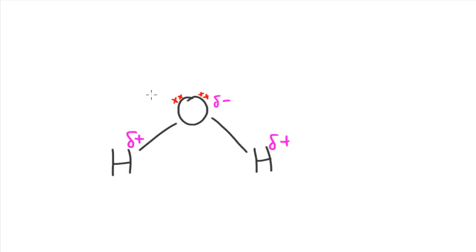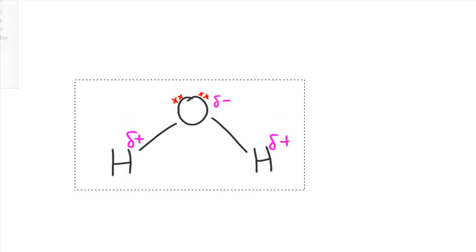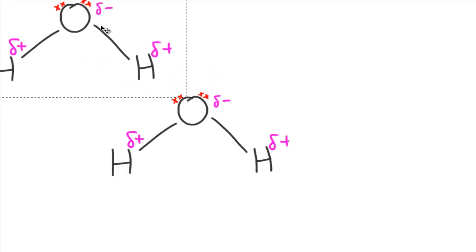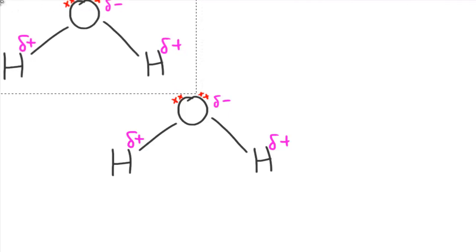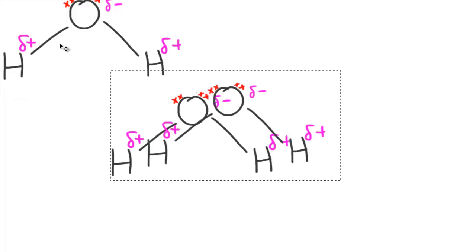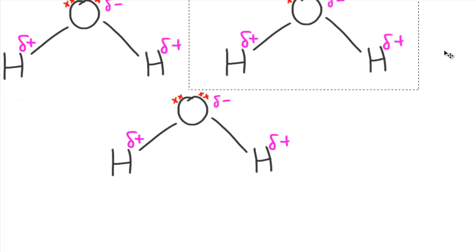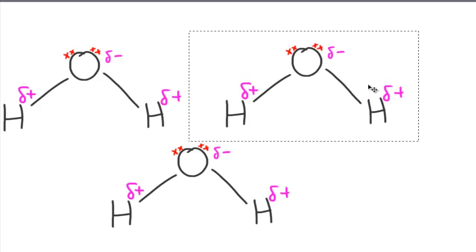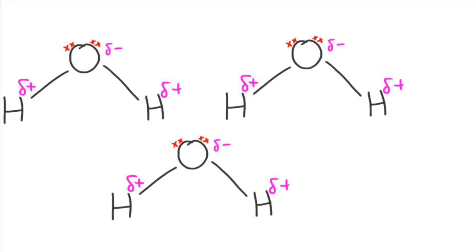Now what we can do is draw another molecule of this and represent the hydrogen bonds. I've drawn one above and one below the central molecule. The reason I've done it like this is because each of the oxygen atoms has two lone pairs, and those two lone pairs can form hydrogen bonds with hydrogen atoms. Since there are two lone pairs, we can form one bond between this lone pair and this hydrogen, and one between this lone pair and this hydrogen.